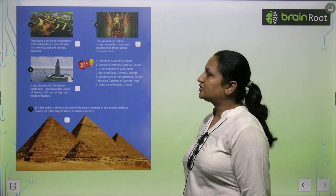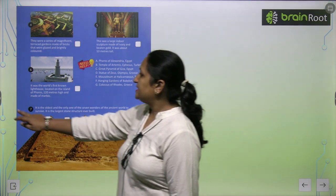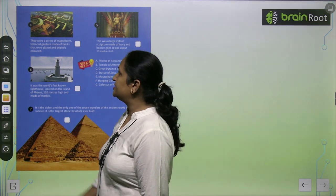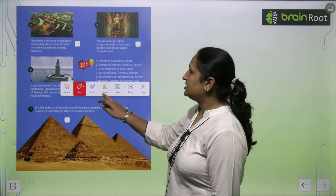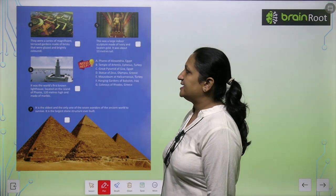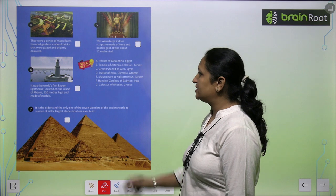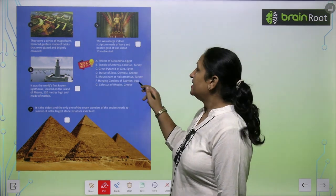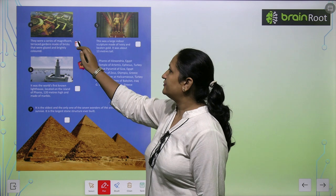See the next one, children. They were a series of magnificent terrace gardens made of bricks that were glazed and brightly colored. This is the Hanging Garden of Babylon, Iraq. You can write here F.